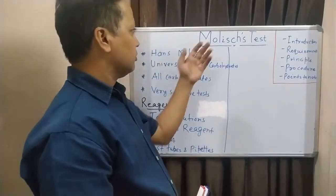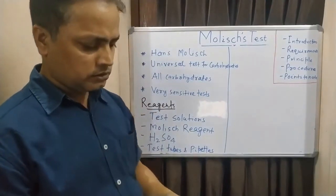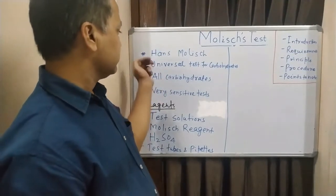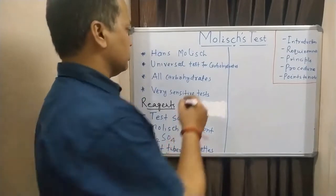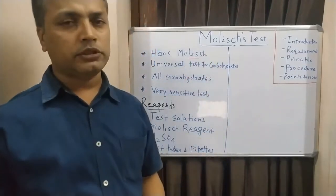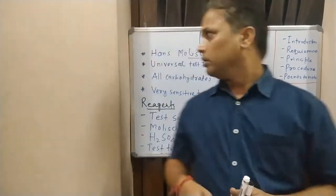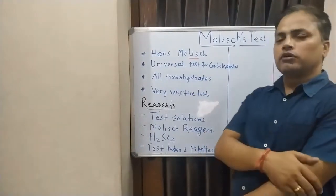The Molisch's test is the most basic and simple test in the biochemistry lab, which normally every lab performs. The Molisch's test is named after the scientist Hans Molisch, who was an Australian botanist. This Molisch's test is the universal test for all carbohydrates.